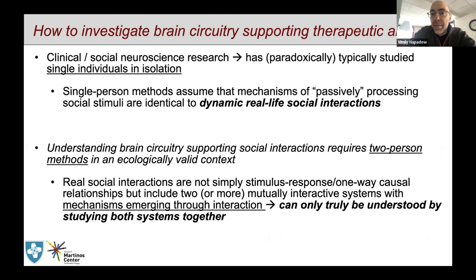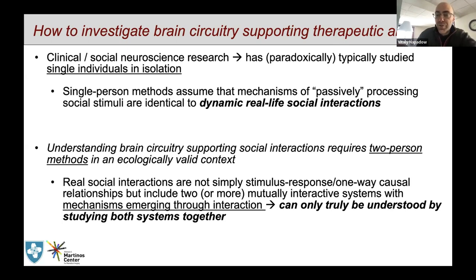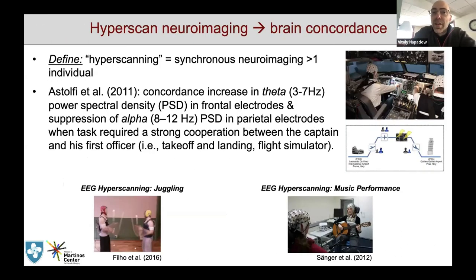So how do we investigate the brain circuitry supporting therapeutic alliance? Interestingly, clinical social neuroscience research has paradoxically studied single individuals in isolation, which doesn't really capture the dynamic and real-life social interactions ongoing between a patient and a clinician as they build their relationship. There are concepts that require two-person methods — we need to study neuroimaging in two-person interactions where the mechanisms emerge from interactions and can only truly be understood by studying both systems together. One way to do this is with hyperscan neuroimaging, which is simply a term that refers to the synchronous imaging of more than one individual at a time.